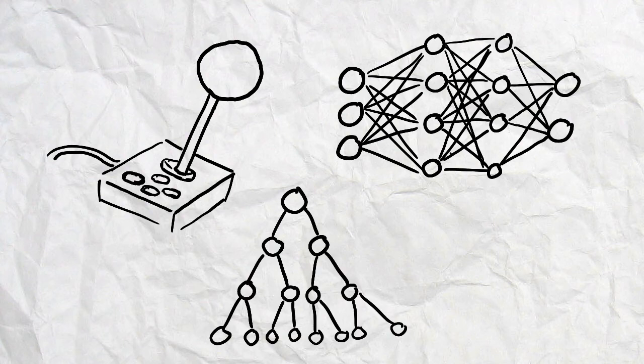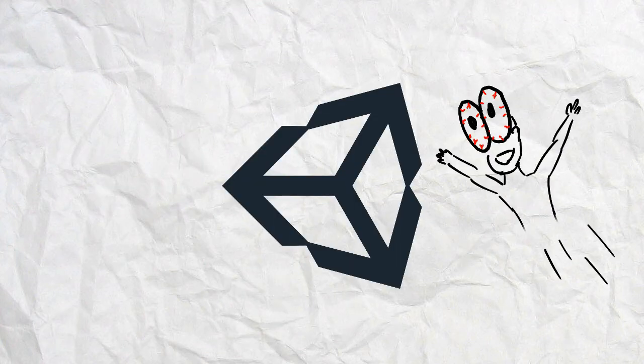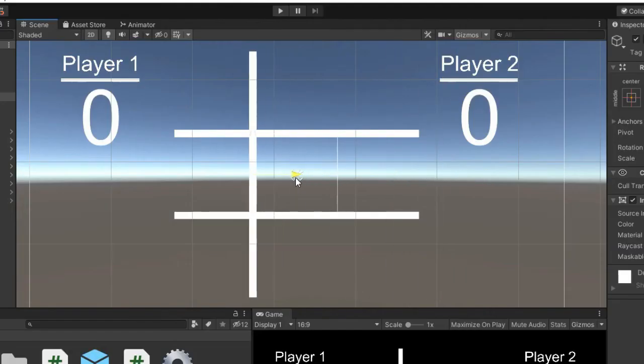So first we need to create the game. And surprise surprise, I used Unity because it's amazing. And honestly, creating tic-tac-toe was actually easier than I thought. First, I just created a bunch of UI elements and rescaled them to make it look sort of like a grid.